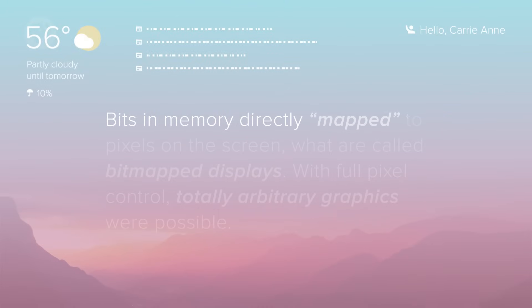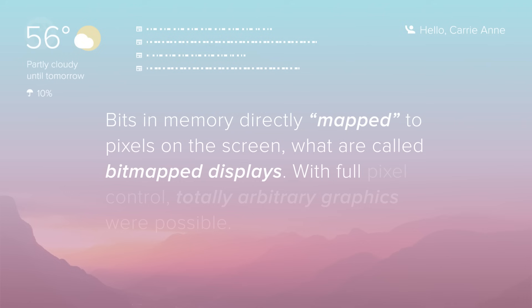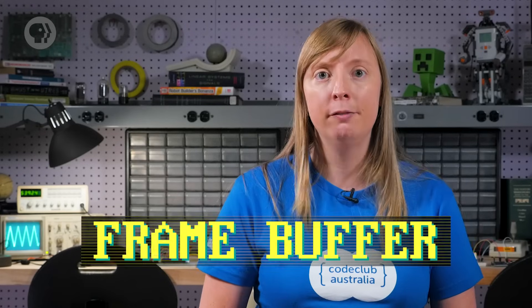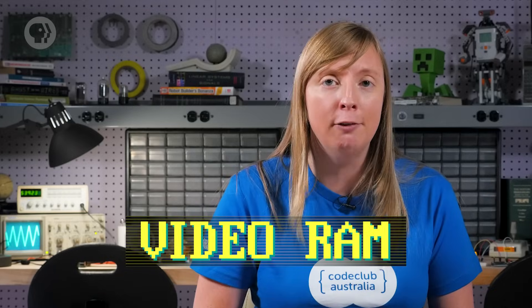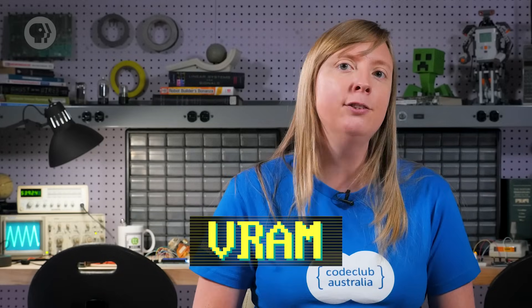The earliest computers and displays with true pixel graphics emerged in the late 1960s. Bits in memory directly mapped to pixels on the screen — what were called bitmap displays. With full pixel control, totally arbitrary graphics were possible. You can think of a screen's graphics as a huge matrix of pixel values. Computers reserve a special region of memory for pixel data called the frame buffer. In the early days the computer's RAM was used, but later systems used special high-speed video RAM, or VRAM, which was located on the graphics card itself for high-speed access. This is how it's done today.